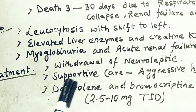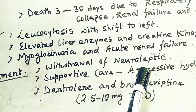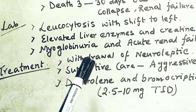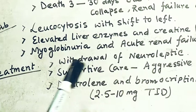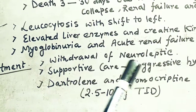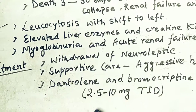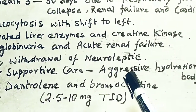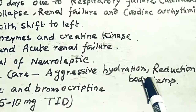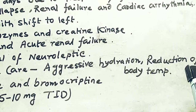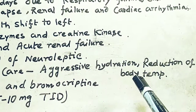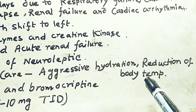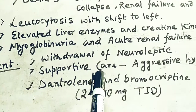Now let us go over the treatment. The first important step is withdrawal of the neuroleptic drug — whether it is Phenothiazine, Butyrophenone, or Thioxanthine. The second treatment is supportive therapy: aggressive hydration and reduction of body temperature, since these patients are associated with hyperthermia.